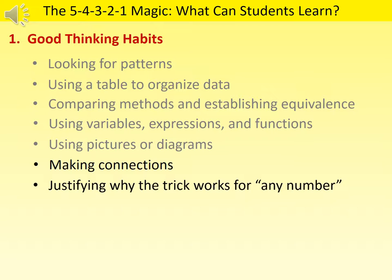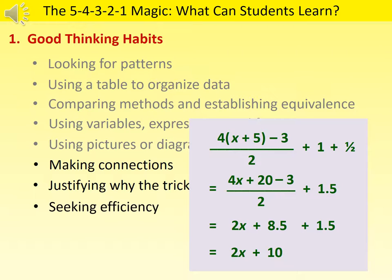After seeing how we use algebra to explain why the magic works, we can highlight the importance of thinking about why it works for any numbers, which is a more convincing justification than why it works for specific numbers. Thinking with generality in mind is a good mathematical habit of mind. We can also point out that in math, we are always trying to do things efficiently. Simplifying an expression is a means to transform a complicated-looking function involving 6 steps into a simpler function involving only 2 steps.